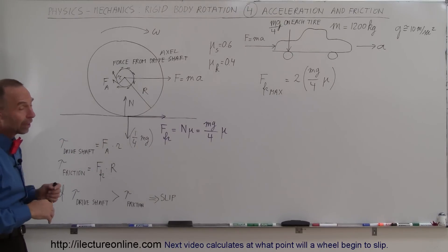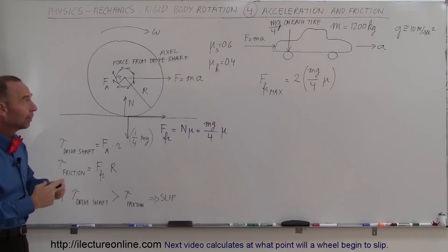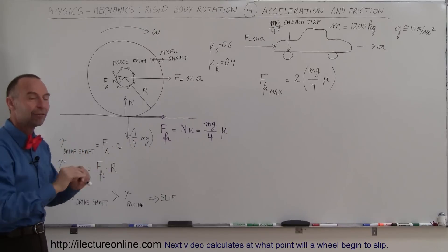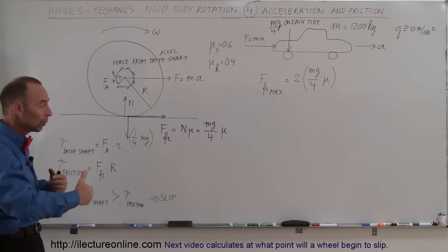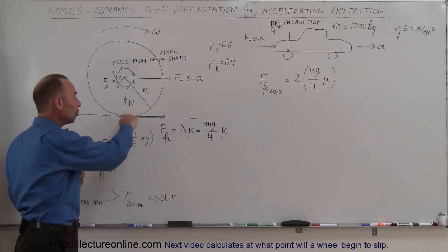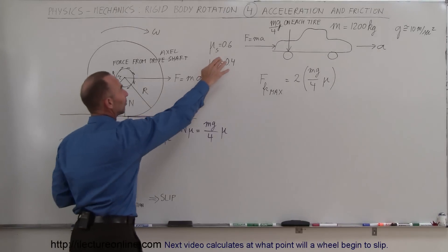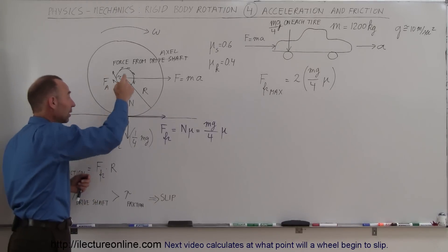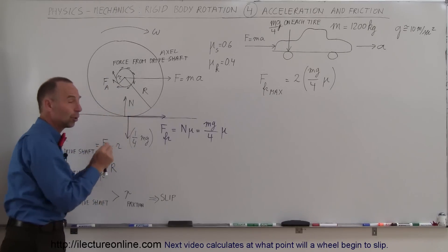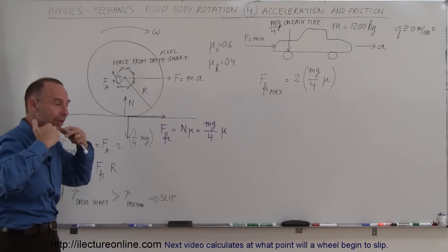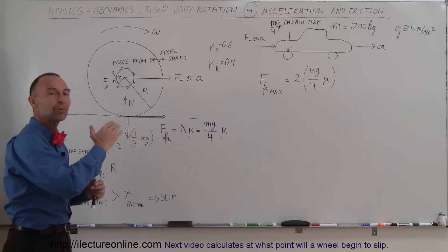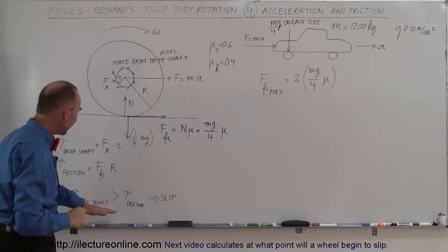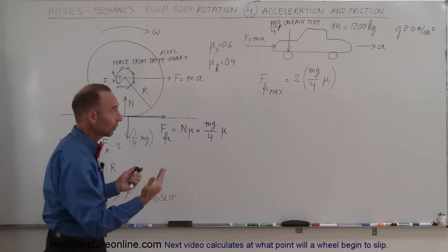Even if the tire slips you still have kinetic friction, so there's still some force pushing the car forward, but not nearly as much as when there's no relative movement between the tire and the road. With no slipping, you have static friction. Remember that as the wheel rotates, the moment the tire touches the road at that contact point the tire isn't actually moving, so there is static friction between the tire and the road at that point.